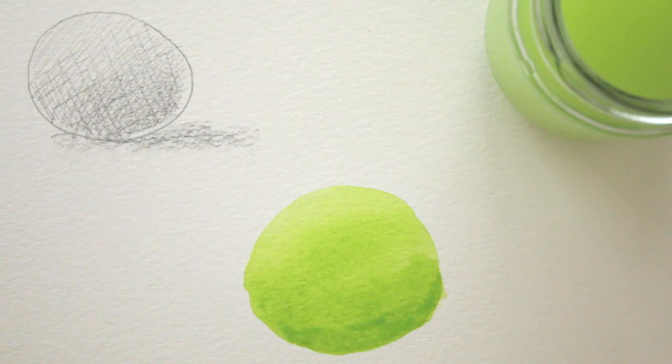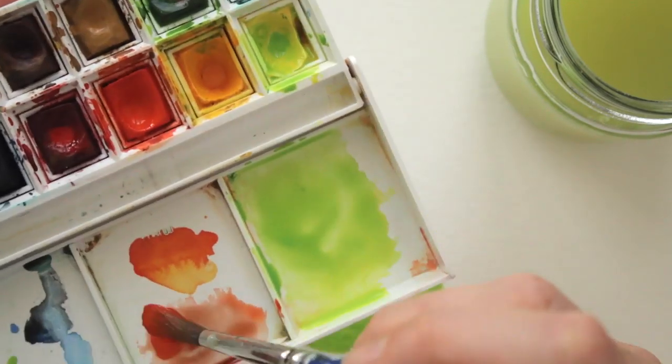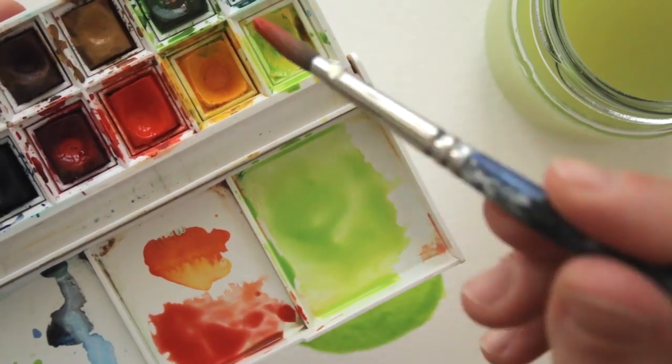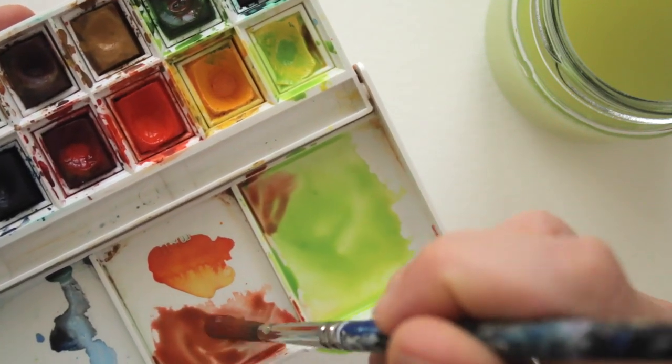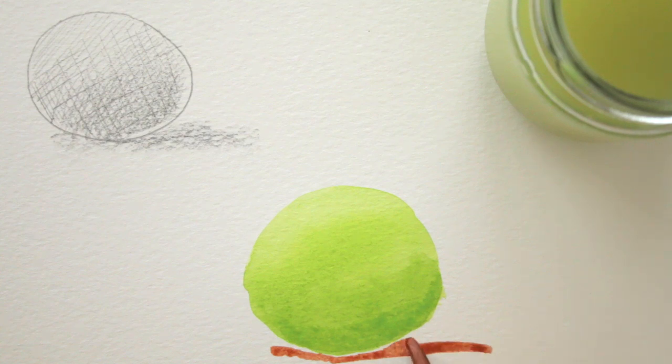Now, let's add some contrast and create a cast shadow with the complementary color of the subject. Because my subject is green, I mix reds, its opposite color, and add a little bit of green too, and apply it below the subject.